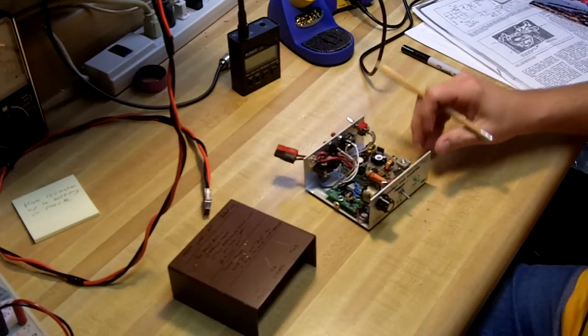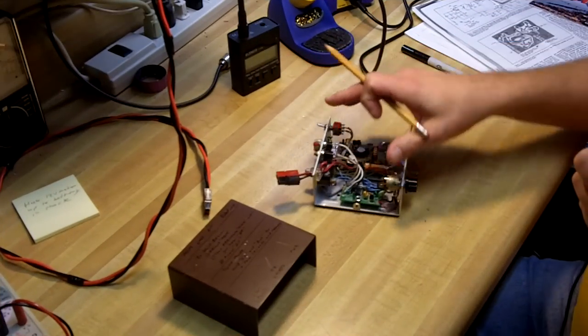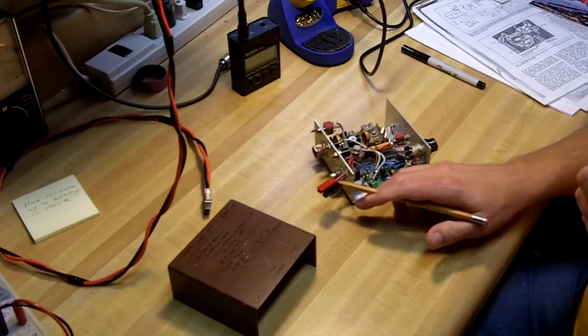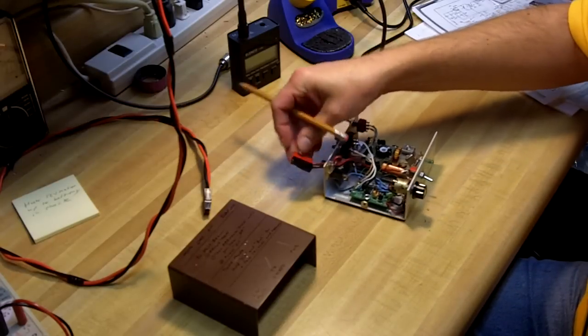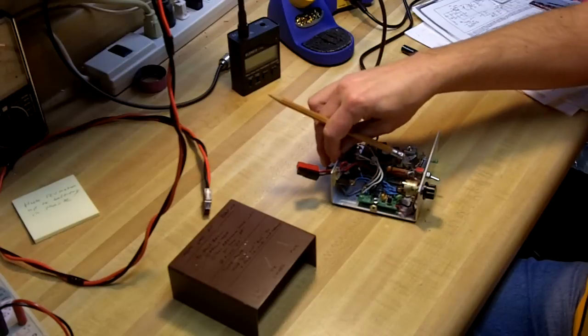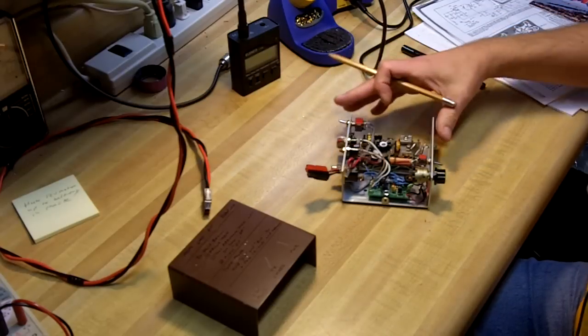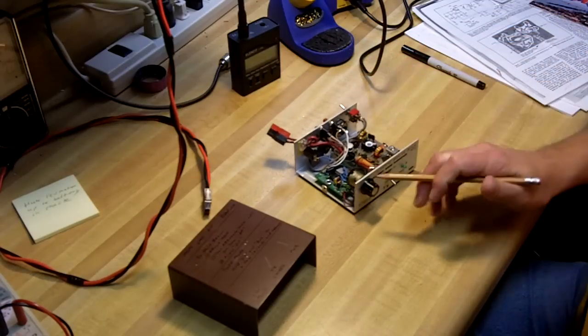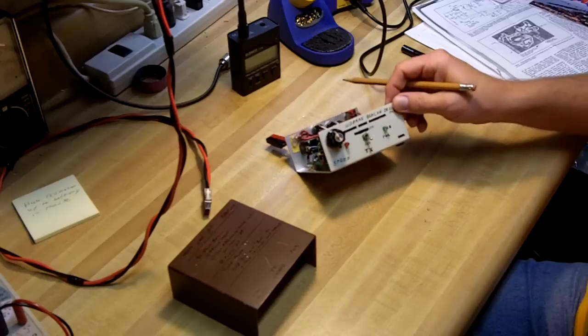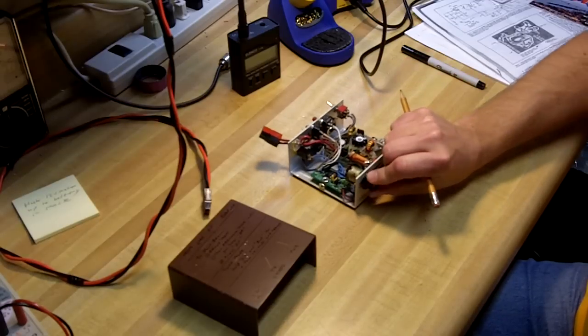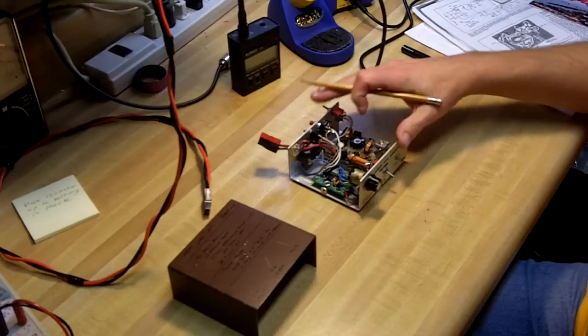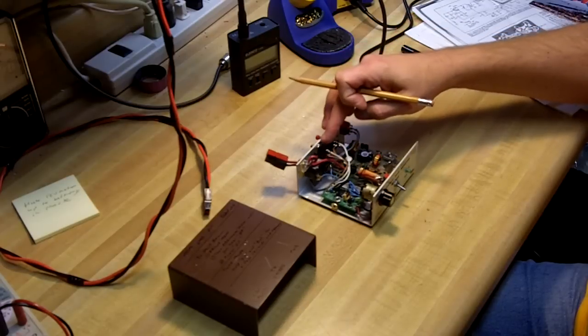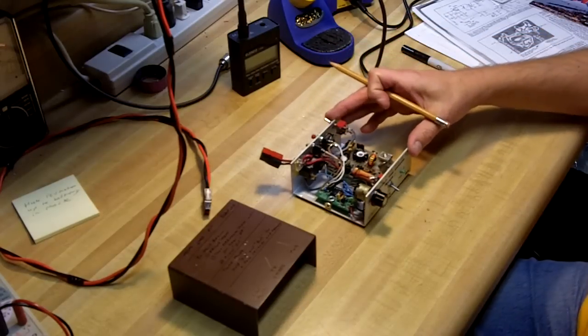The things I wanted to change or add was I wanted to add a Anderson power pole connector there for power, for DC power. So I put one of those on and I wanted to add a speed control for my CW speed which makes it much easier to adjust. You can adjust it on the fly rather than having to go into the program mode and adjust the speed.